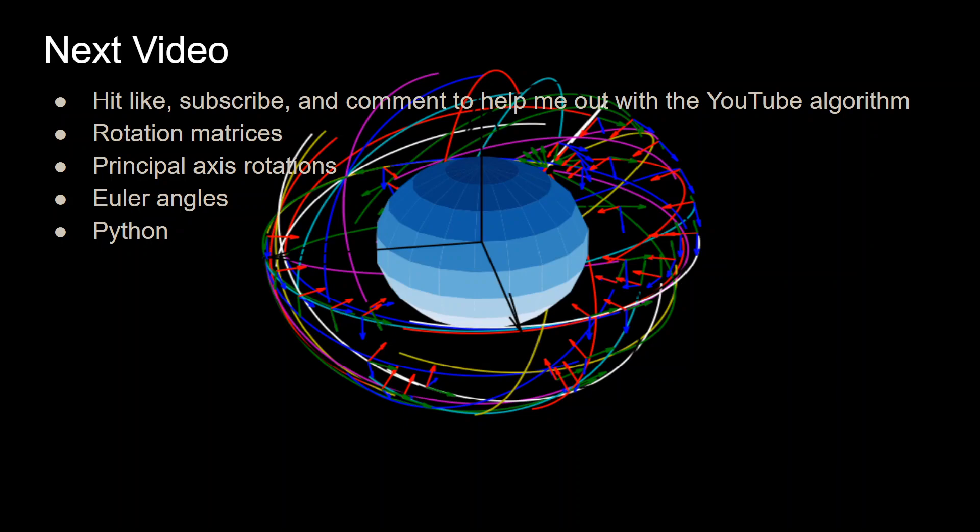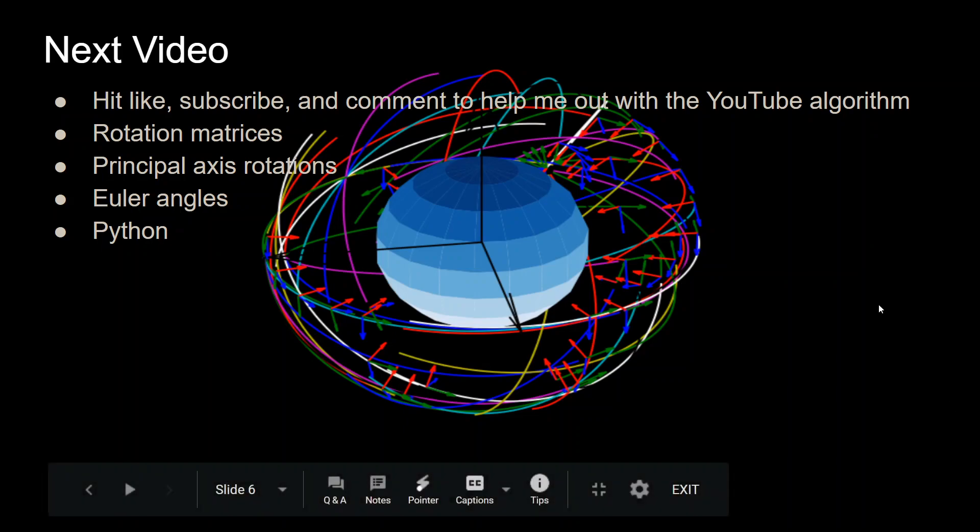That's it for this video. Be sure to hit like, subscribe, and comment if you like the video in order to help me out with the YouTube algorithm. I'm going to be building on this specific series by going through rotation matrices, principal axis rotations, and once you get those two down, you can understand what Euler angles are. Then I'm going to go into quaternions and then also in the attitude control series. And then I'm going to show how to do everything in Python. So that's what I'm thinking for this series. Let me know what you think in the comments, and thank you for watching.